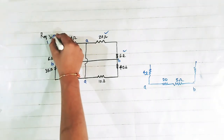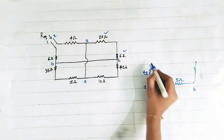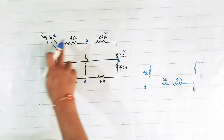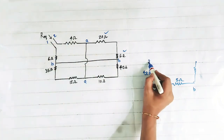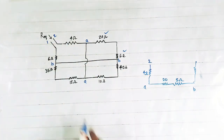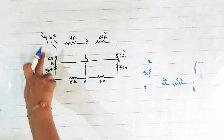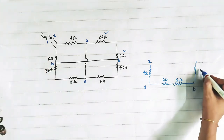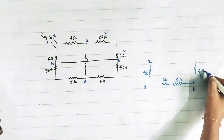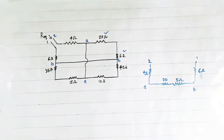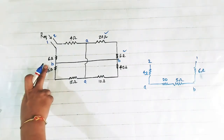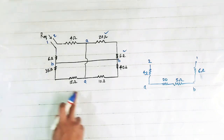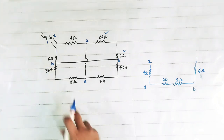Suppose this is point 1 and this is point 2. So between A and 2, a 4 ohm is connected, and between B and 1, this 6 ohm is connected. Now between B and A, again this 35 ohm and 15 ohm are connected.